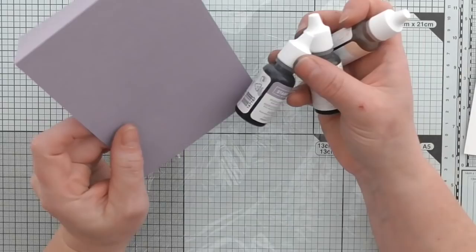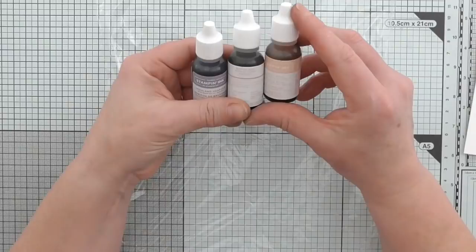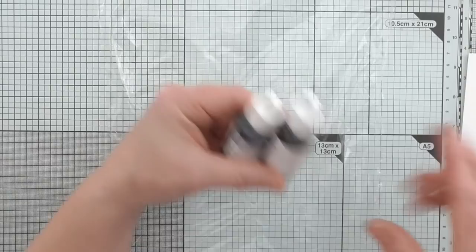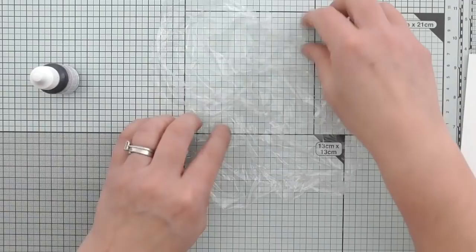I'm going for Blushing Bride and this one is Petal Pink. So they're all kind of close together so that hopefully it won't mix into a muddy mess. That is the theory. We shall see. So I'm just going to scrunch this up a little bit before I start. And then I'm going to add some drops of the re-inkers.